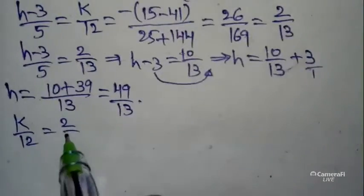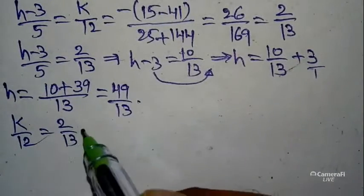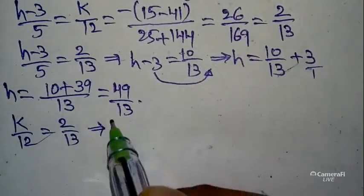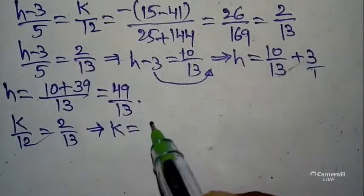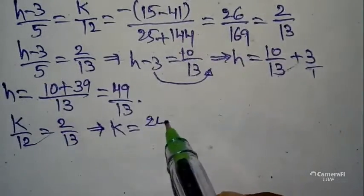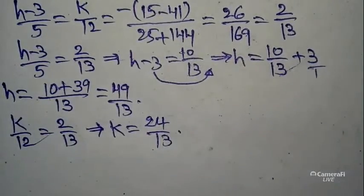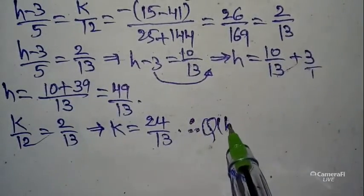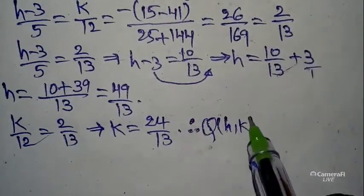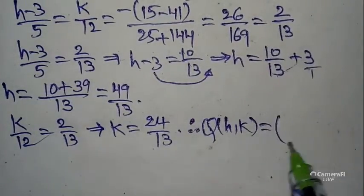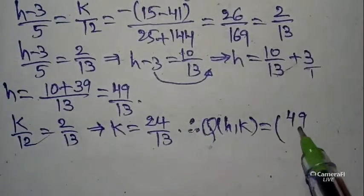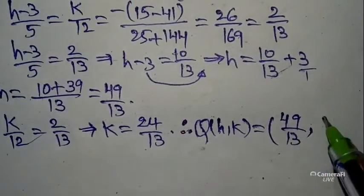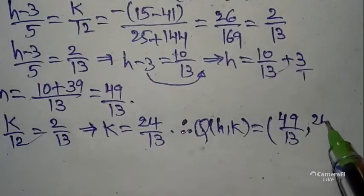Next, to get k: equate k/12 = 2/13, so k = (12×2)/13 = 24/13. Therefore Q(h, k) = (49/13, 24/13).